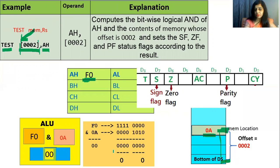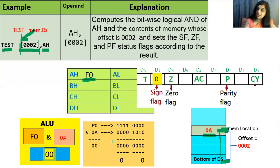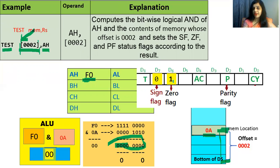Based on the result 00: the most significant bit is 0, so the result is positive and the sign flag is 0. Since the result of the operation is 0, the zero flag is set to 1. The parity flag is also set to 1. This is how the TEST instruction works in the case of TEST memory, register.